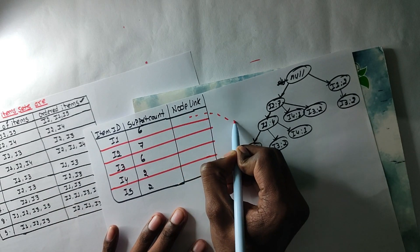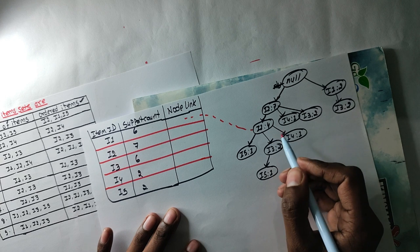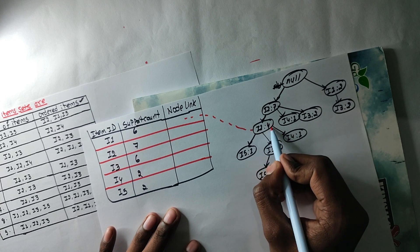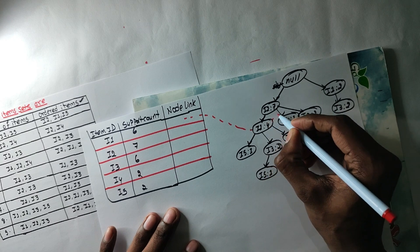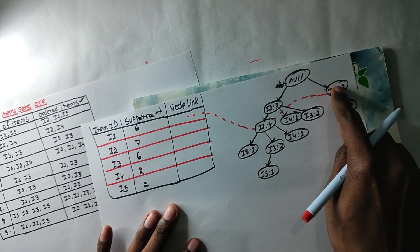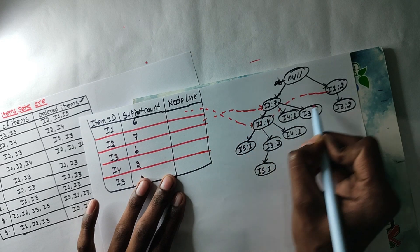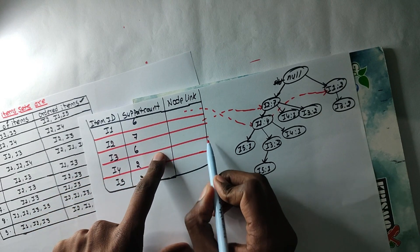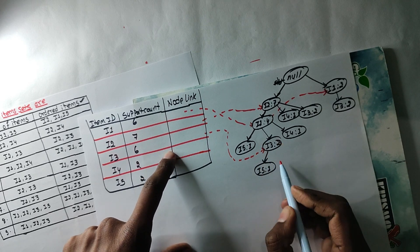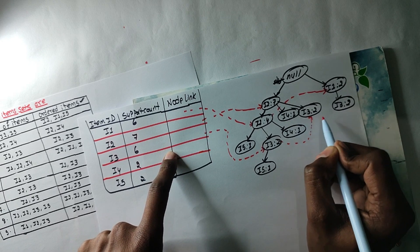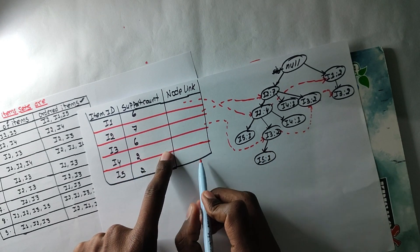Look, this is 4. This is 4. Now I2. I2 is 7. Then I2 is 7. This is 3. I3. This is 3. This is 4. If I3, I5 is 5.